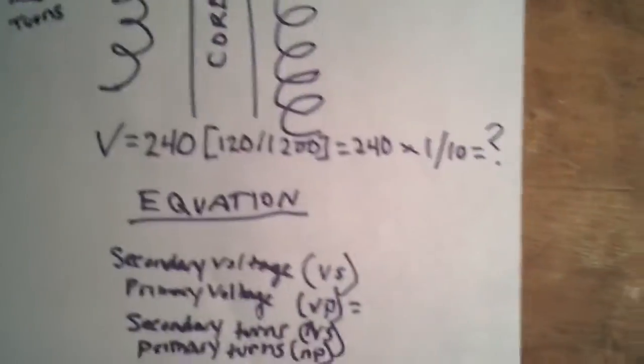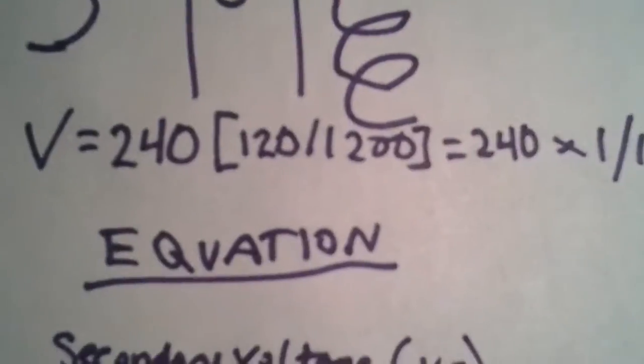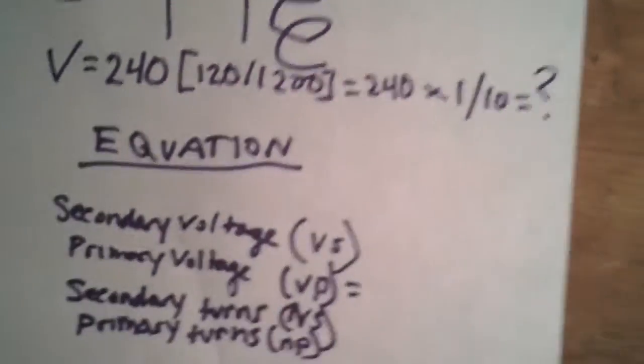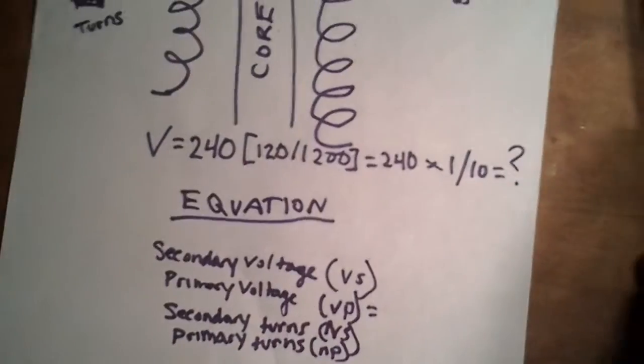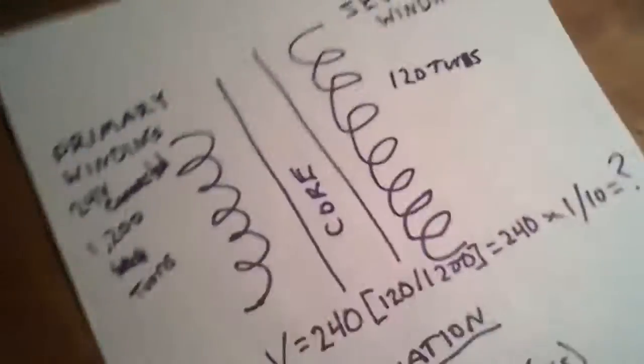That's basically a quick explanation of how a power transformer works. Again, I'll give you the equation here. Here's what you have to do to figure out the output voltage. The output voltage is equal to 24 volts. The reason has to do with the ratio of turns on the output.